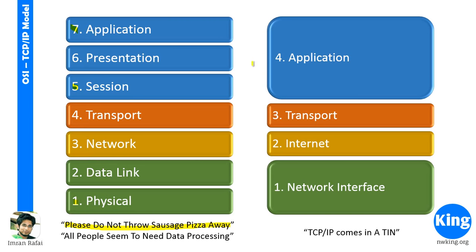Some people would want to remember the layers from top to bottom, which is perfectly fine. If you want to remember it from top to bottom, there is another mnemonic: All People Seem To Need Data Processing. As long as you remember that the physical layer is layer 1 and the application layer is layer 7. Some people get confused and think application is layer 1 — no. Application is layer 7; physical is layer 1.